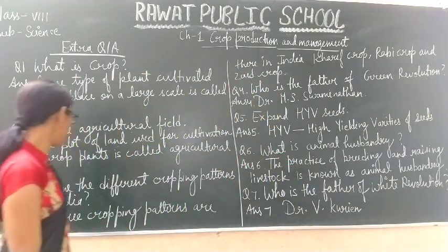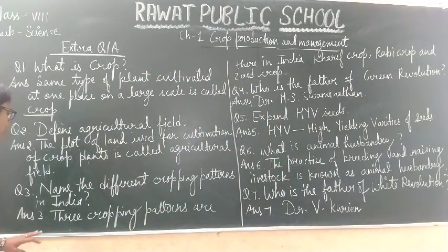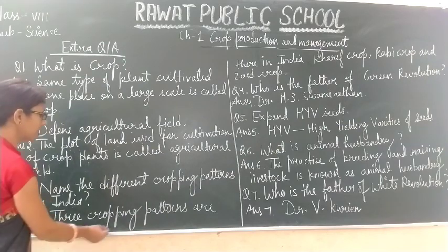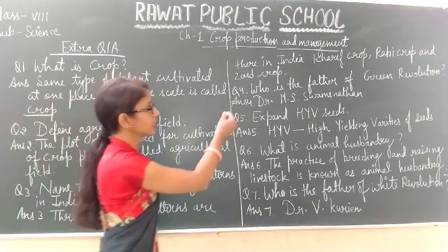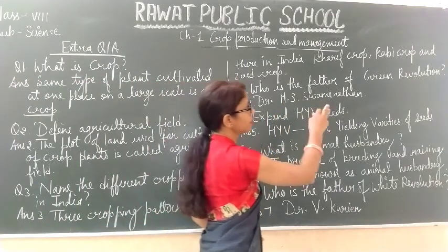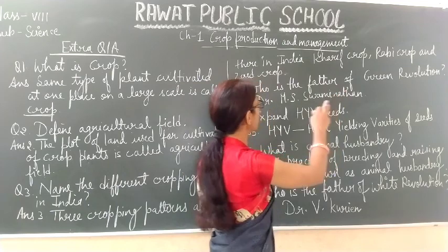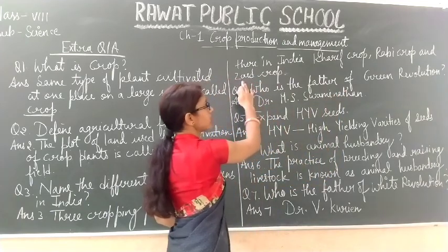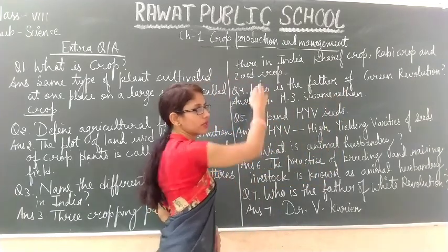So the written answer to question three: Three cropping patterns exist in India — Kharif crop, Rabi crop, and Zaid crop.